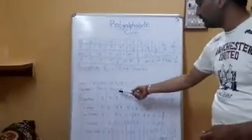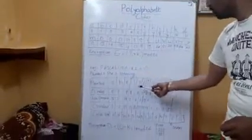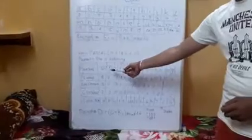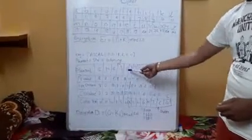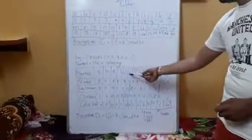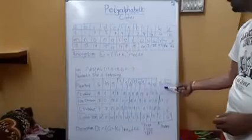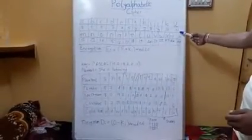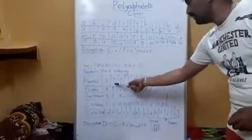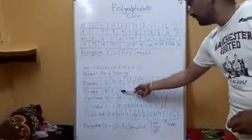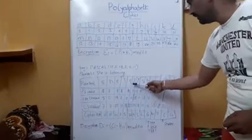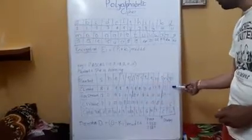Our plain text is 'she is listening.' We form a grid where we write every alphabet in a single block: S, H, E, I, S, L, I, S, T, E, N, I, N, G. We write the plain text values using the table: S is 18, H is 7, E is 4, I is 8, S is 18, L is 11, and similarly for all remaining alphabets.